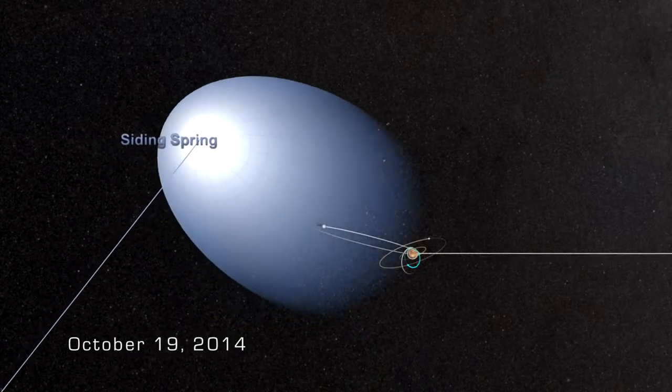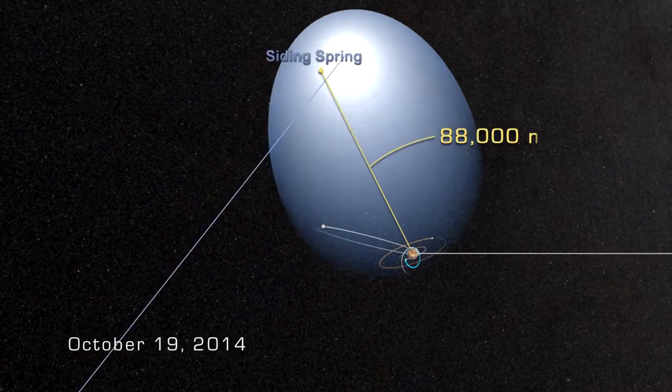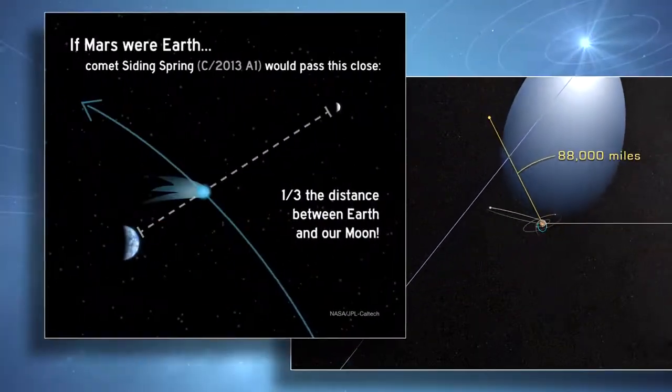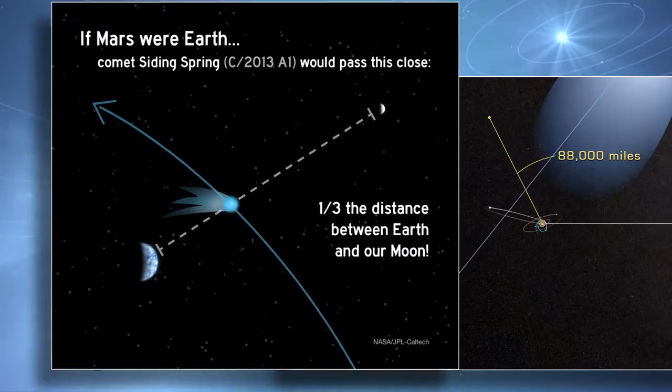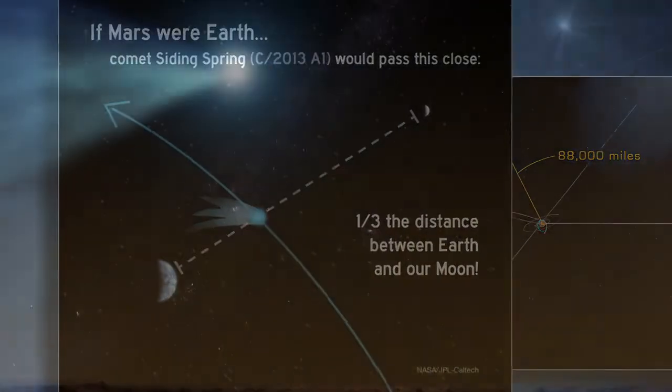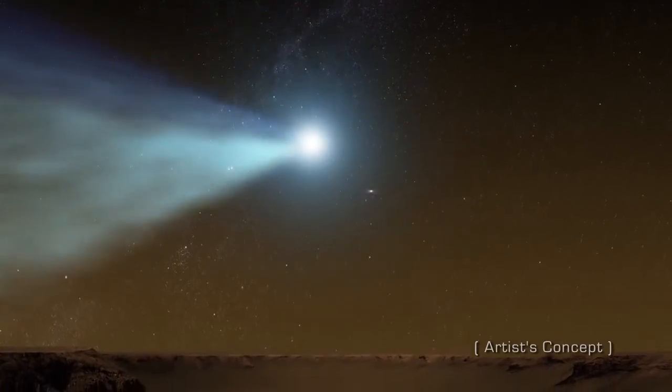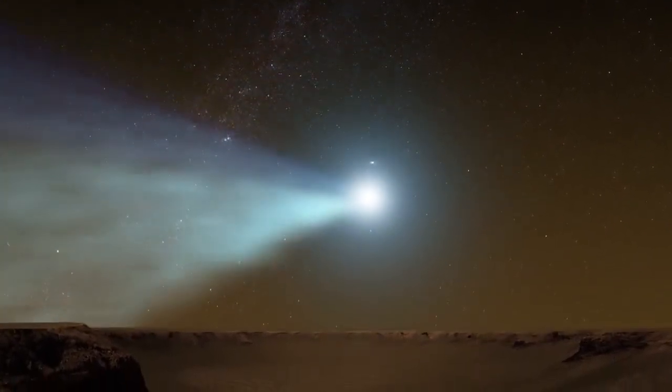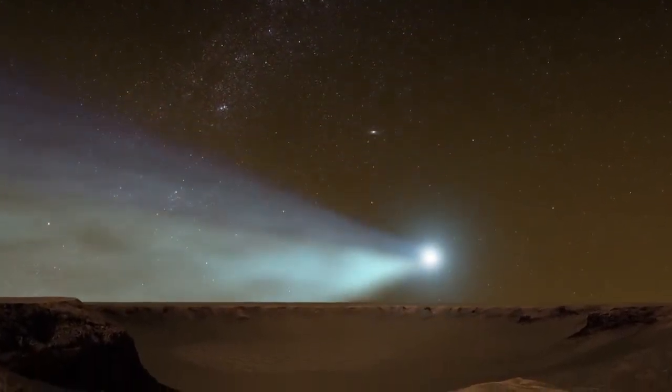On October 19th, Comet Siding Spring will come within 88,000 miles of the Red Planet, roughly one-third of the distance from the Earth to the Moon. Anyone standing on Mars might be treated to a spectacular view, with the comet's long tail of gas and dust dominating the northern skies.